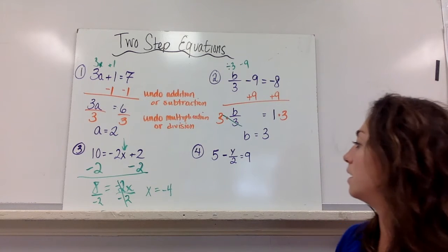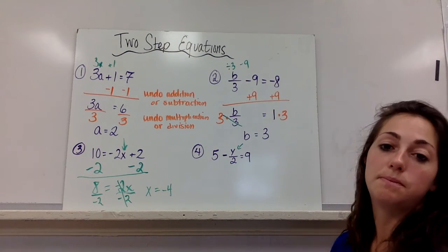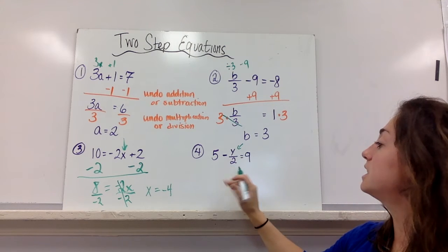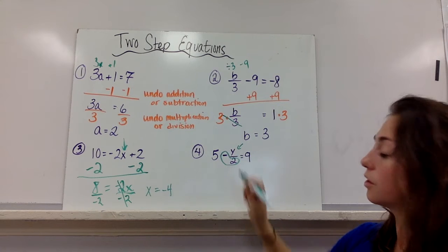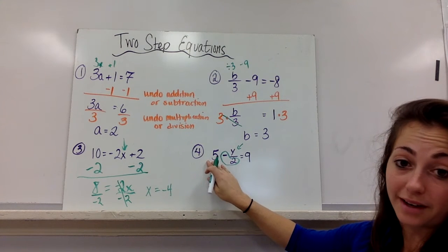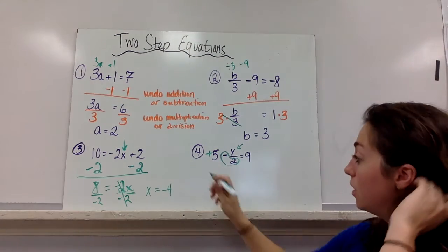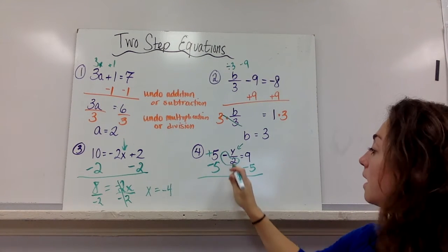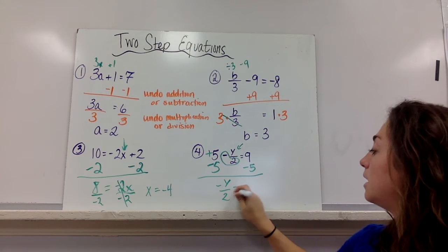All right. The next one. What's happening to the variable? Where is it? It's right here. This one's tricky because it's rearranged. It actually is being divided by—this negative goes with the 2. And then this 5 is positive. So I have to do the opposite of the 5, which means subtract it. Then those will cancel, and I'm left with negative y over 2 equals 4.